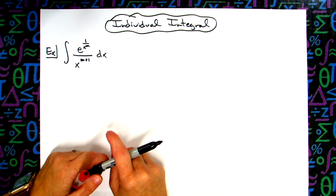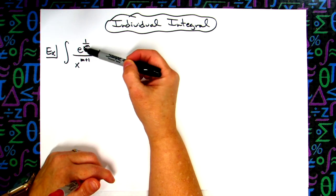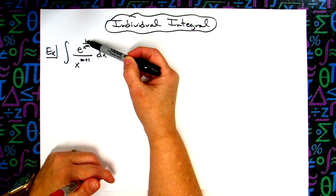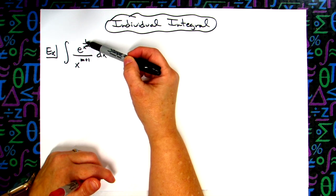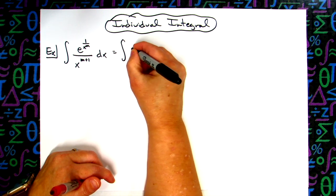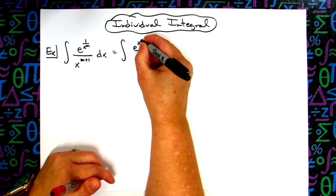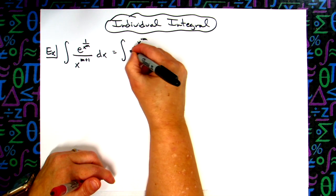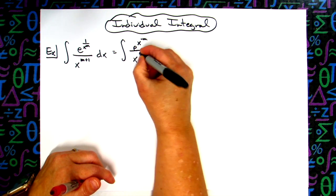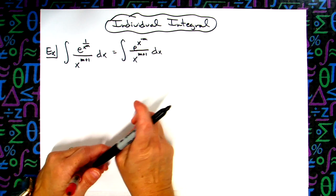Now the very first thing I want to do is a little bit of algebra manipulation here. I'm going to take a look at this exponent, and I'm going to do laws of exponents, and I'm going to move this up to the top and make that a negative m exponent. So we'll have the integral, my numerator is going to look like e raised to the x to the negative m, and then all over x to the m plus 1 dx. So a little algebra maneuver here at the very beginning.